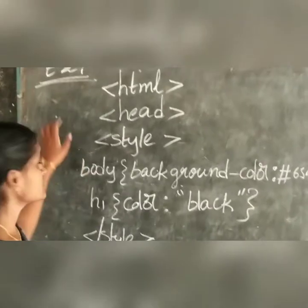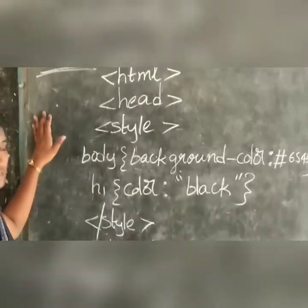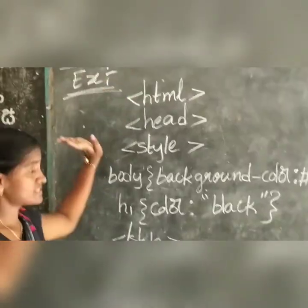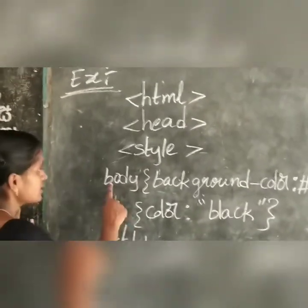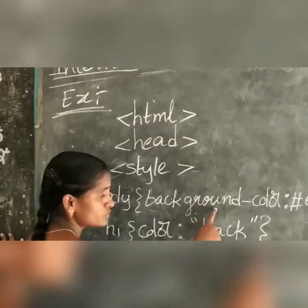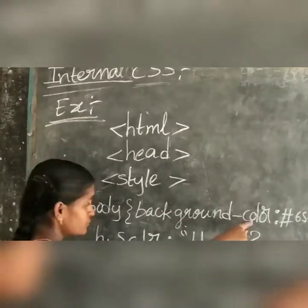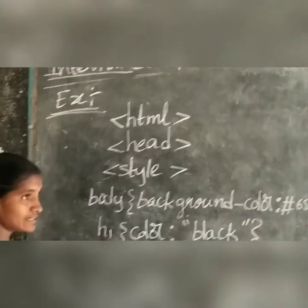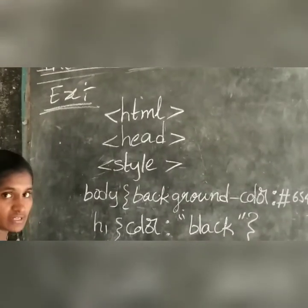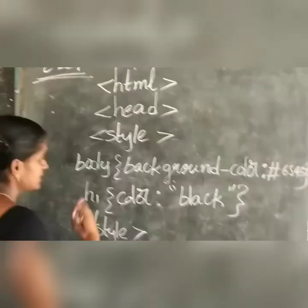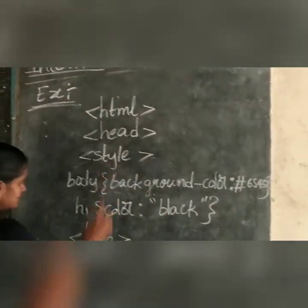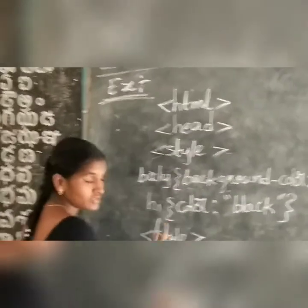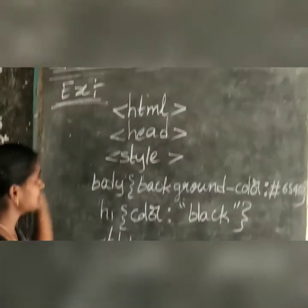Now let's see an example of internal CSS. In this example, we set the body background color and give the heading H1 a black color. These styles are placed inside the head tag. That is why this is called internal CSS.